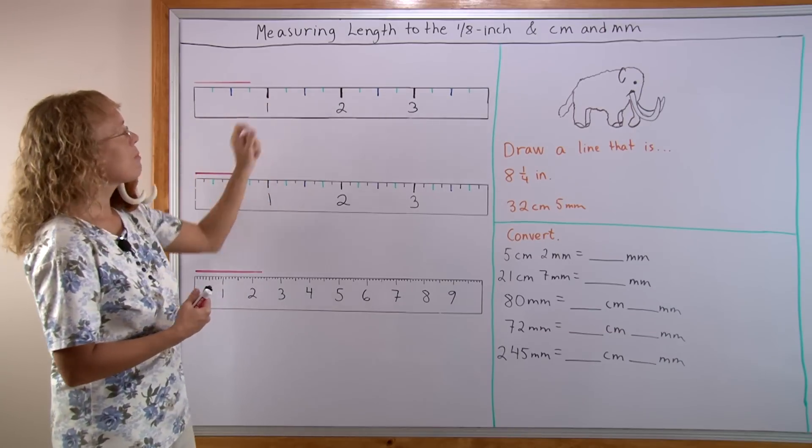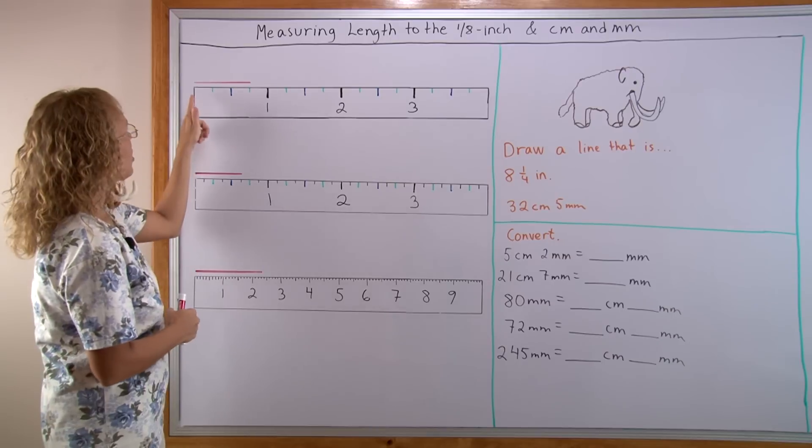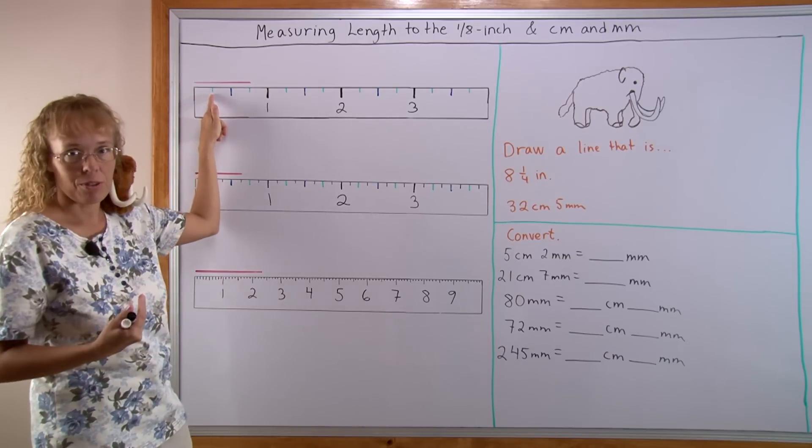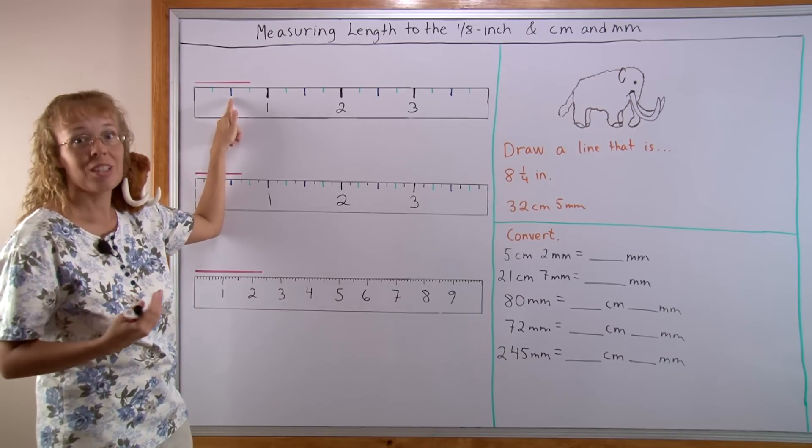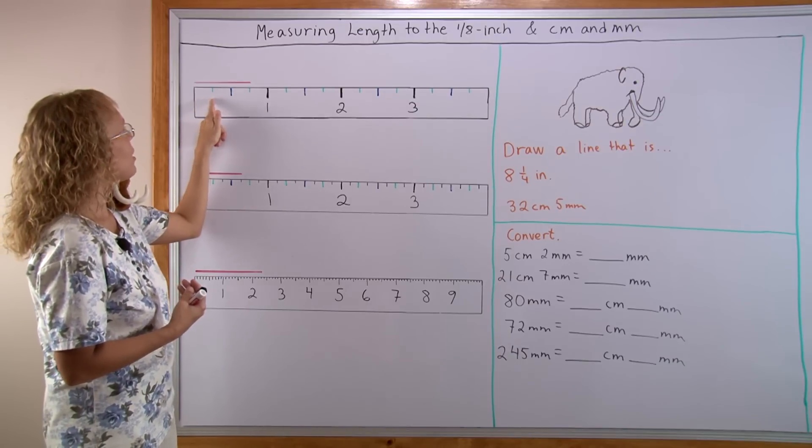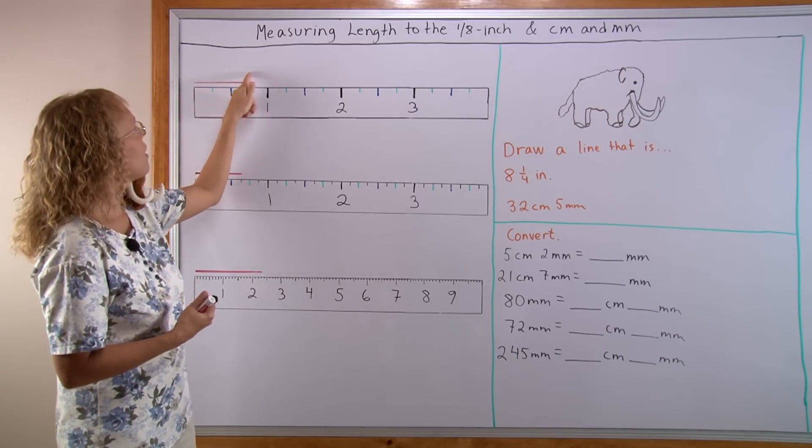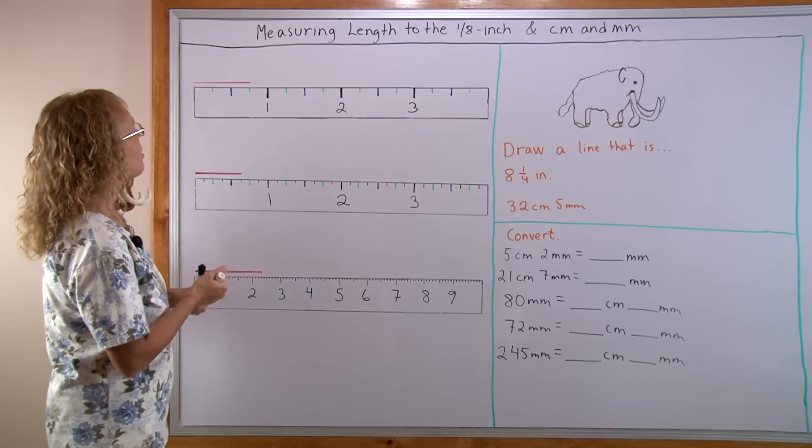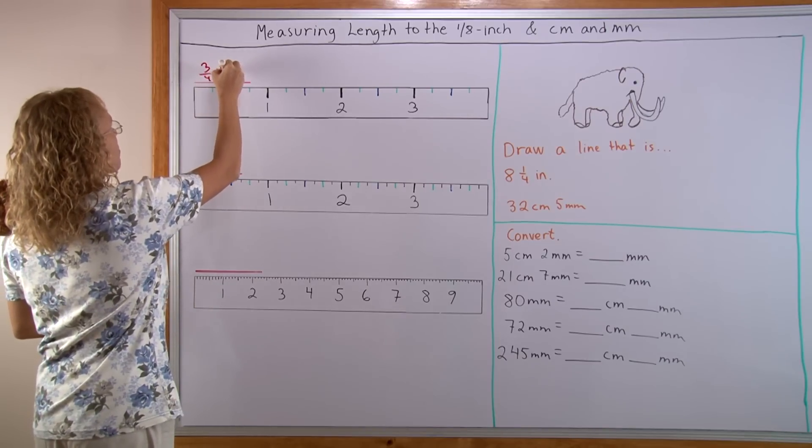And then the green little tick marks are for the 1/4 inch increments. So from here to here is 1/4 inch. From here to here is 1/2 inch but it is also 2/4 of an inch. And then from here to here is 3/4 of an inch. So this red line here actually measures exactly 3/4 of an inch.